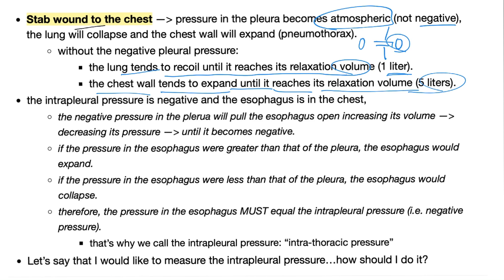Now tension pneumothorax is different — there is actually a valve. Like your tire valve, which lets air into the tire but doesn't let air out. When you have tension pneumothorax, air comes in and a valve-like mechanism exists that allows air to come into the pleura but not to exit. This will raise the intrapleural pressure to positive — not negative, not even atmospheric, but positive. That's tension pneumothorax. That's why the pleura on this side pushes the mediastinum towards the normal side, with tracheal shift towards the normal side and away from the affected side.